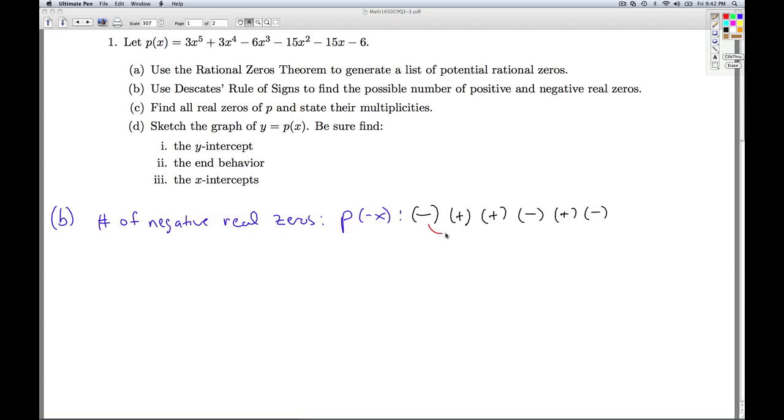So I count the variations in sign. One change there, no change here, one change here, one change here, and one change here. So I have 1, 2, 3, 4 variations in sign. That means I have 4, 2, or 0 negative real zeros.